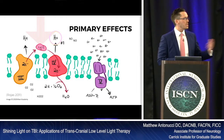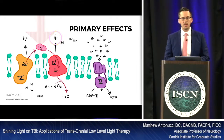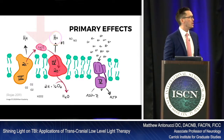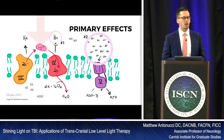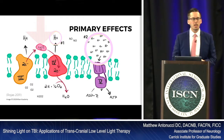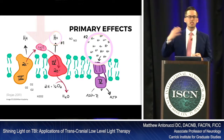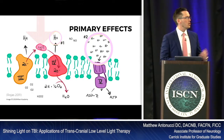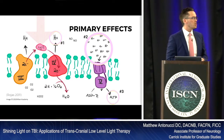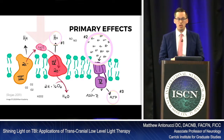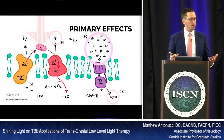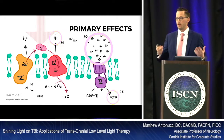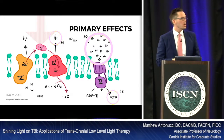When light shines on cytochrome C oxidase, it creates hydrogen molecules. As those hydrogen molecules increase in number, we see an influx into complex five, and the end result is ATP. We all know that ATP is super important for life, for energy.